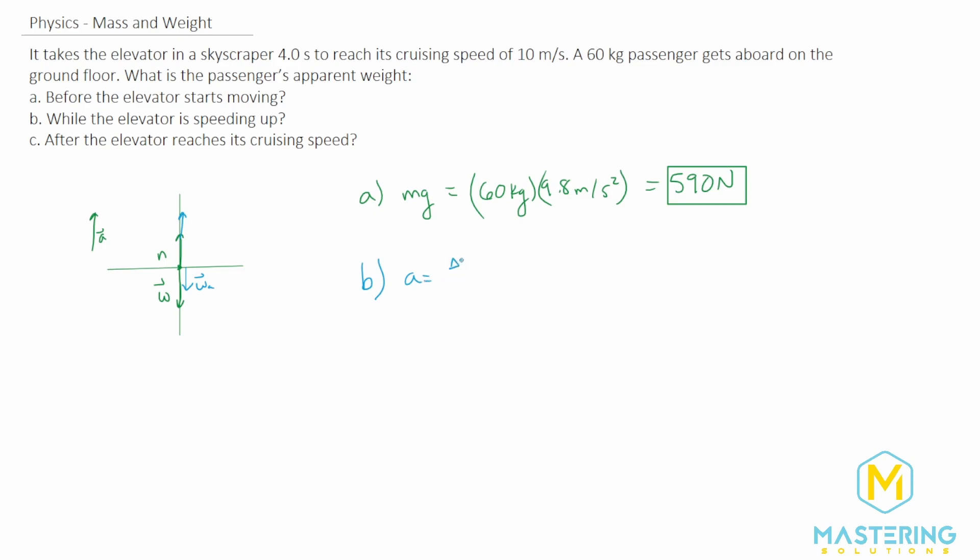Acceleration is the change in velocity over the change in time. The change in velocity is 0 to 10 meters per second, so we have 10 meters per second for our delta v, and 4 seconds for our delta t. 10 divided by 4 is 2.5. So we have 2.5 meters per second squared for the acceleration in the elevator.